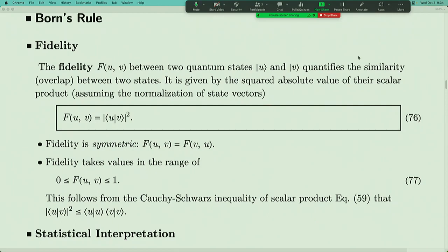Fidelity is symmetric because exchanging U and V only changes the scalar product by a complex conjugate, which doesn't affect the absolute value squared. Fidelity takes values between zero and one, following from the Cauchy-Schwarz inequality. If both U and V are normalized states, then |⟨U|V⟩|² ≤ ‖U‖²‖V‖² = 1, and as an absolute value squared it's ≥ 0. So fidelity is a number between zero and one — very much like a probability.